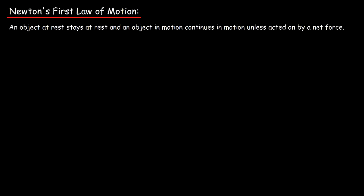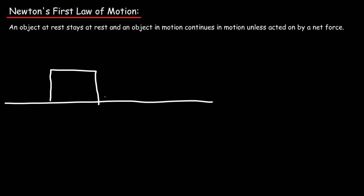The main idea behind Newton's first law of motion is: an object at rest stays at rest, and an object in motion continues in motion unless acted on by a net force — that is, a non-zero net force. For example, if you place a five-kilogram block on the ground and it's at rest, that block is going to stay at rest unless you push it.